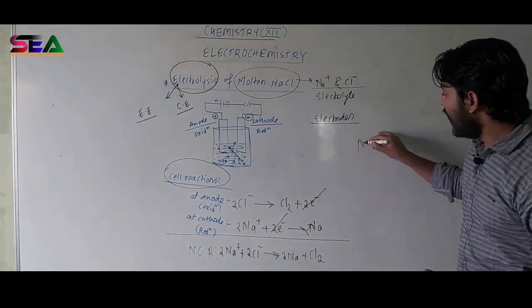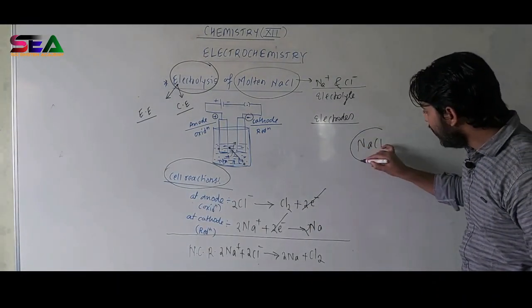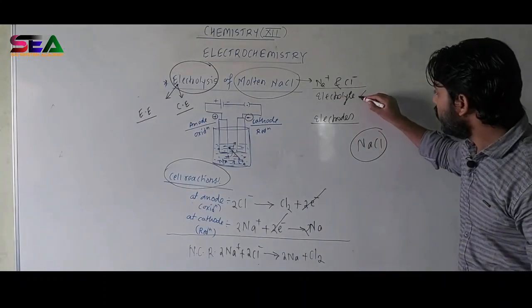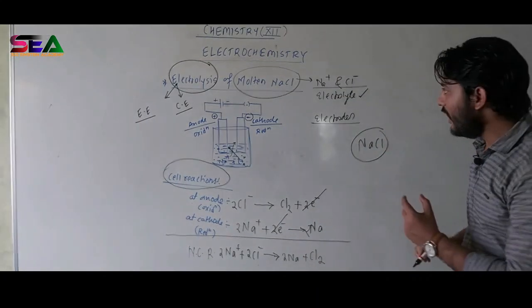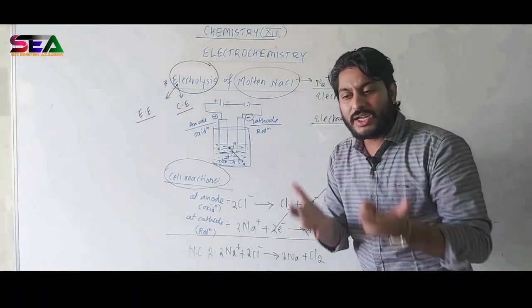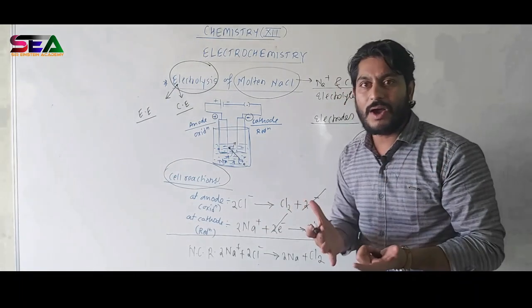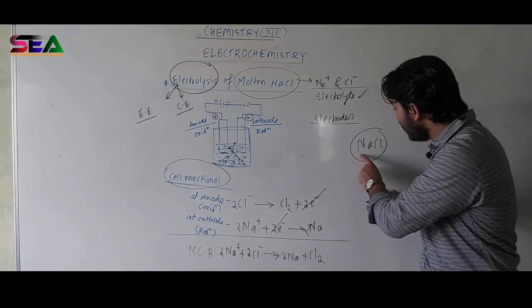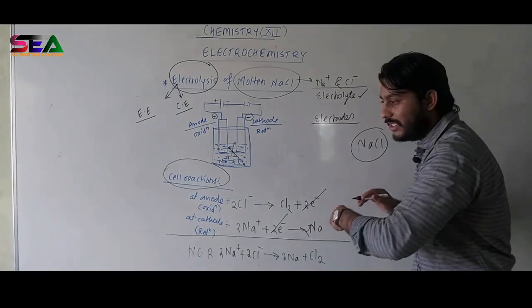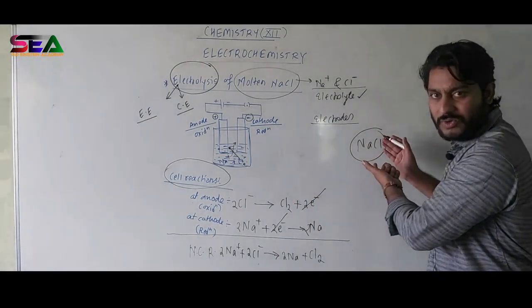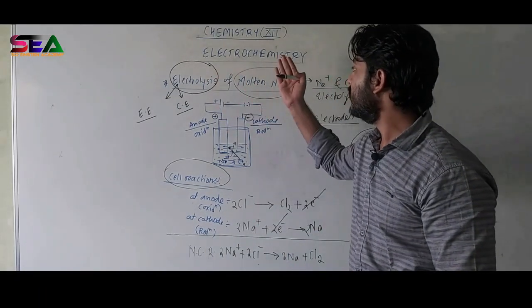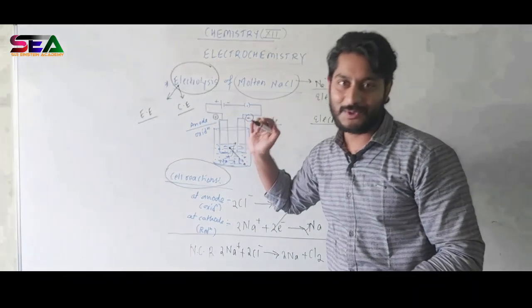So, you can simply understand we have taken NaCl as our starting material which was named as electrolyte. We provided electricity for bringing certain chemical change and what kind of chemical changes we have got about? We have converted NaCl into pure Cl and pure sodium which has different properties than that of the compound. So, this is nothing but chemical change. So, this is what all about electrolysis of molten NaCl. Thank you so much.